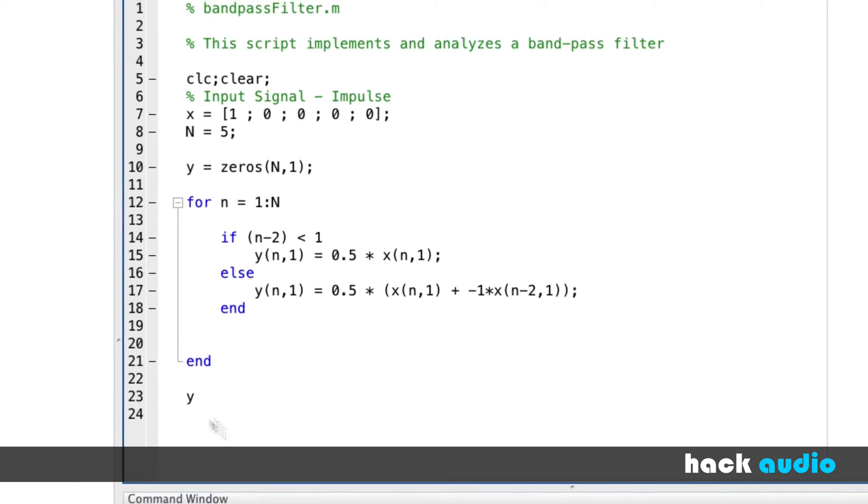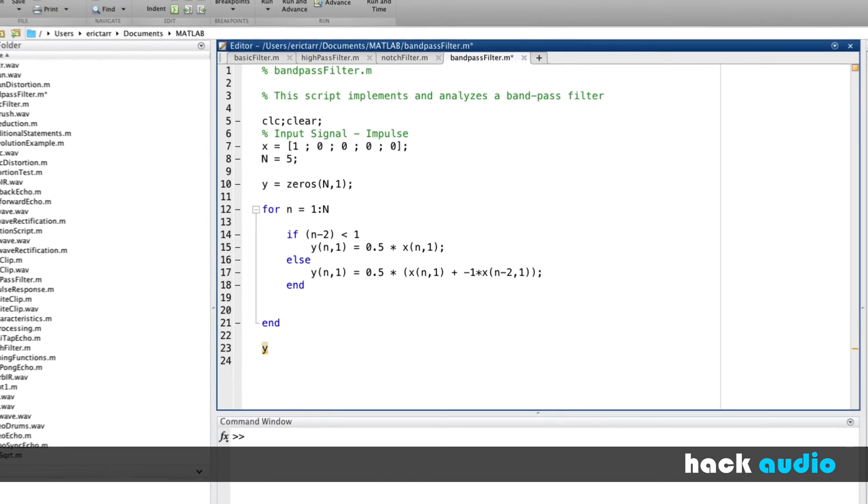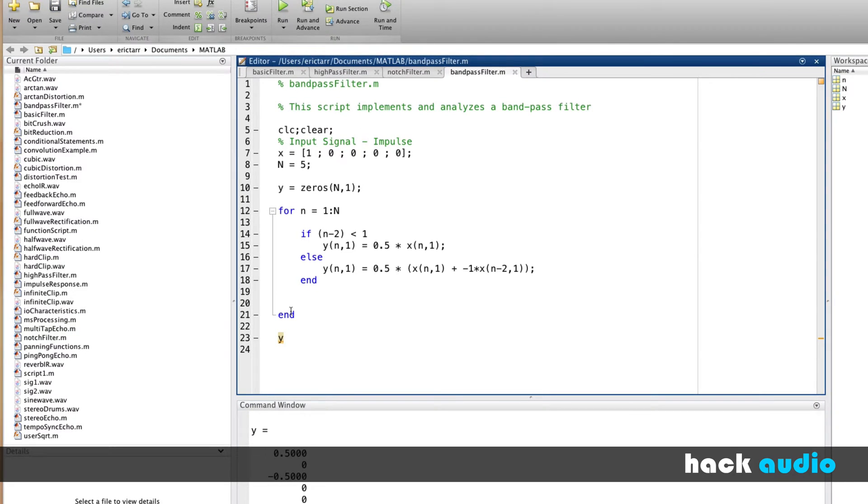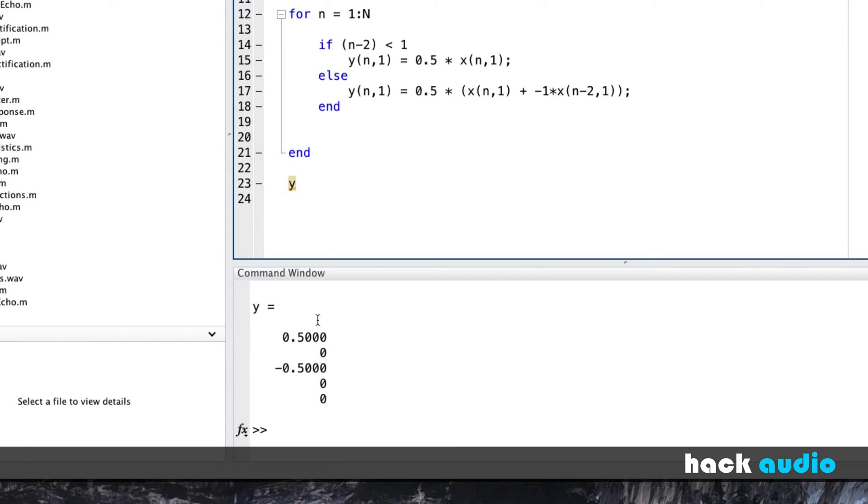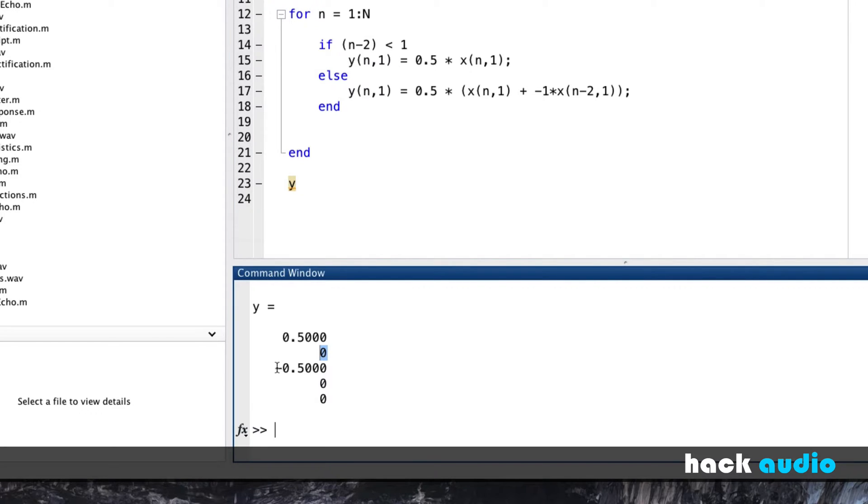And we can look at what the end result is. I'll print Y, and it will show up down here in the command window. So now we see that our impulse response has a gain of 0.5, and then it has a gain of 0 and then minus 0.5. And that's associated with the two samples of delay.